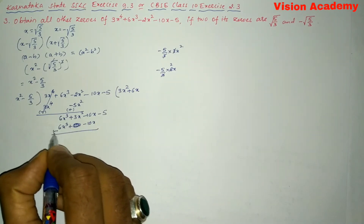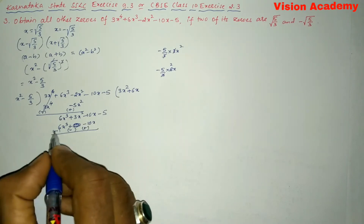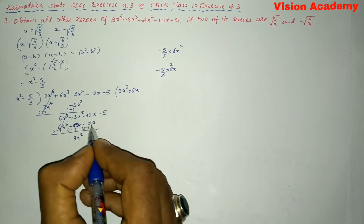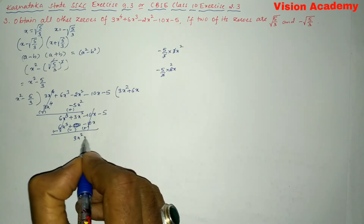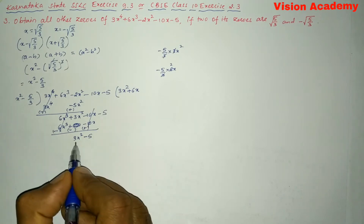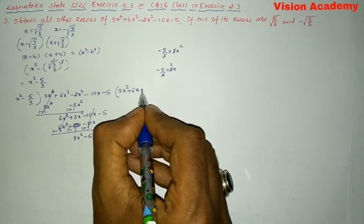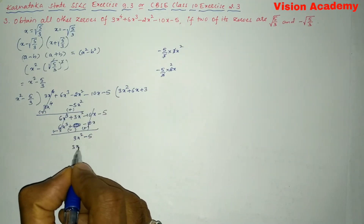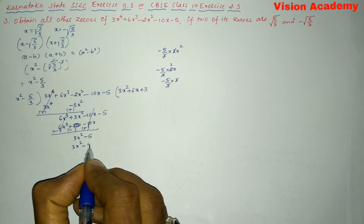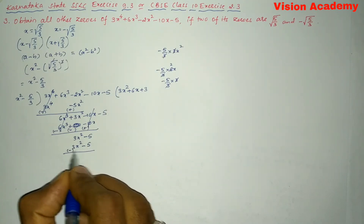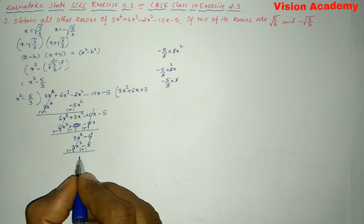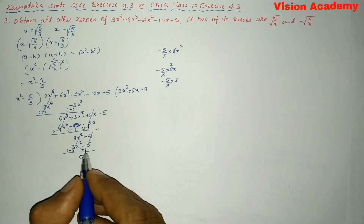Subtracting: the 6x³ terms cancel. 3x² remains. The +10x and −10x cancel. −5 remains. Now, what do we multiply by x² to get 3x²? We multiply by 3. So 3 × x² = 3x², and 3 × (−5/3) = −5. Changing signs and subtracting: 3x² − 3x² cancels, +5 − 5 cancels. Remainder is 0.